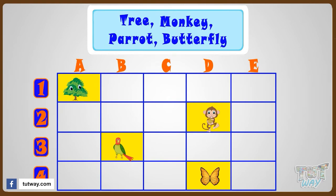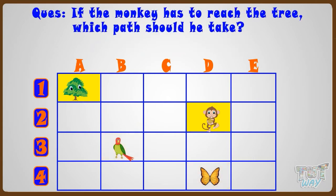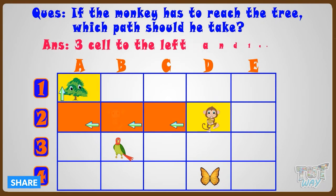Now let's answer a few questions based on this grid. If the monkey has to reach the tree, which path should he take? He should move three cells to the left and then one cell up to reach the tree.